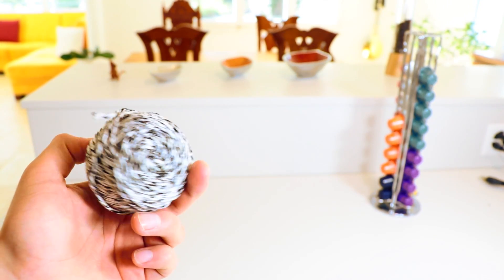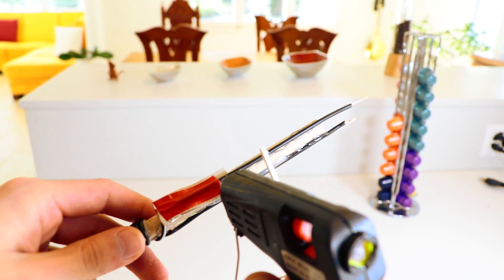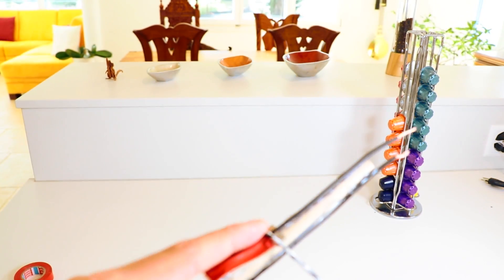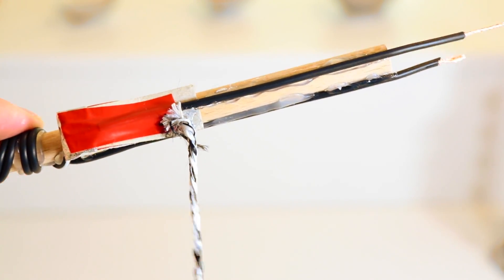Next take a small ball of string. Add a small bead of hot glue to the wooden dowel, then secure the string into place and start twisting the dowel.